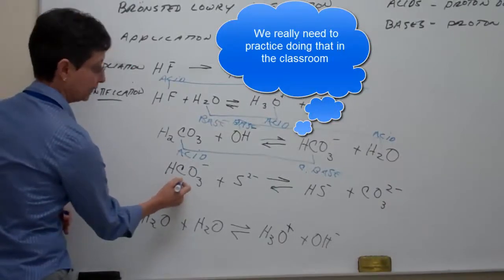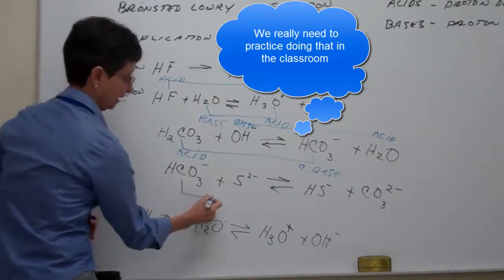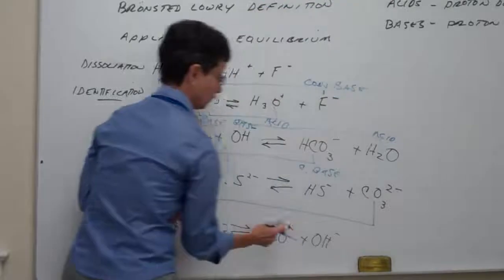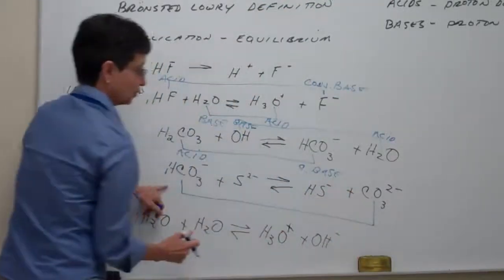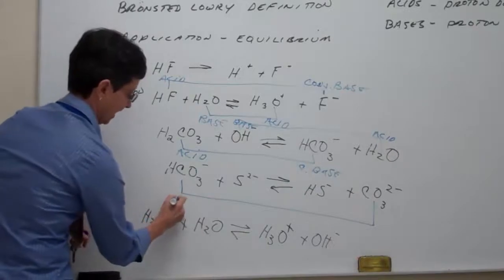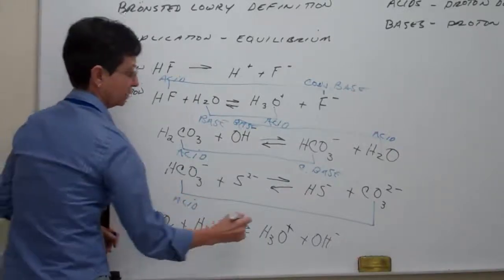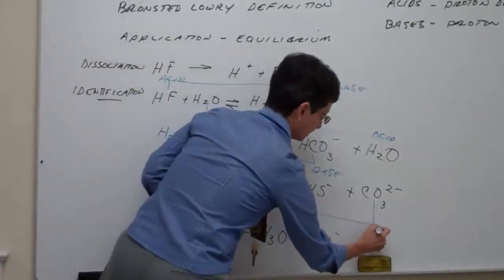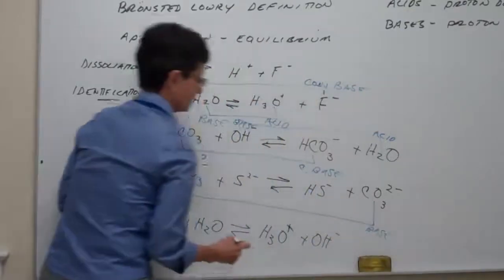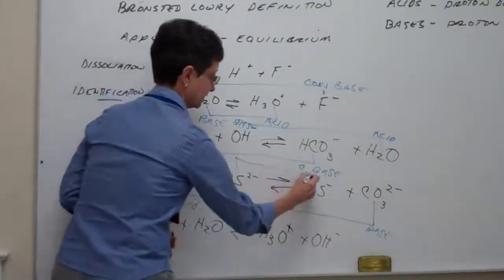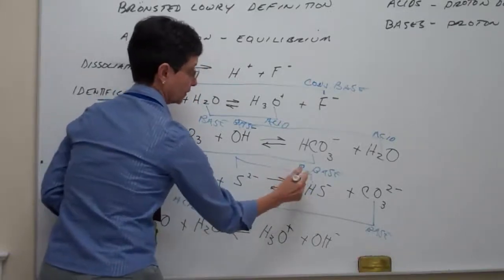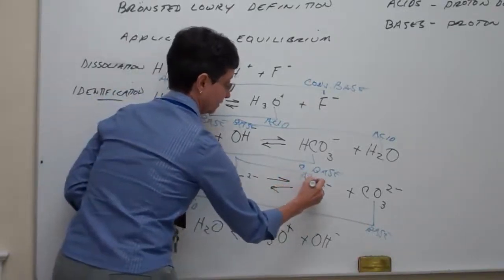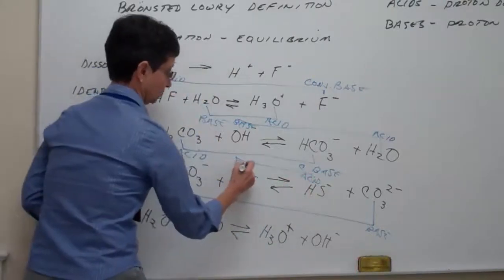Alright, this one over here, we have HCO3- and CO3 2-. This differs only by one H. So, therefore, this would be the acid, and this would be its conjugate base. And, over here, the difference is, again, one proton. So, therefore, this would be the acid, and this would be its base.